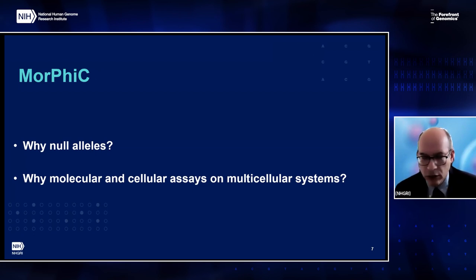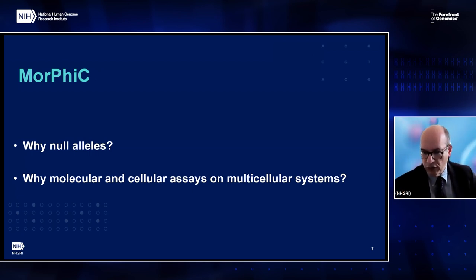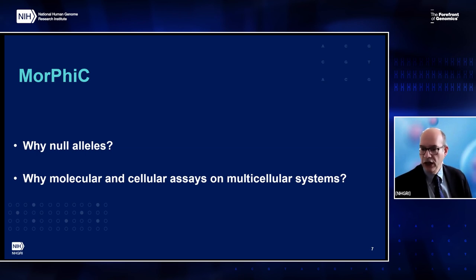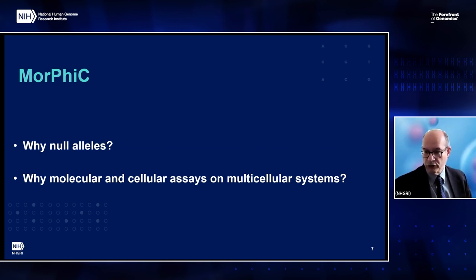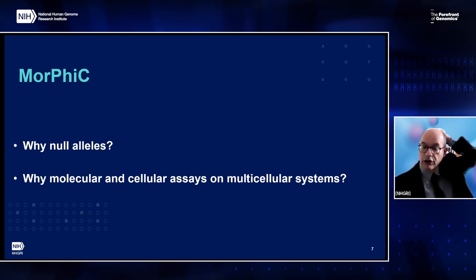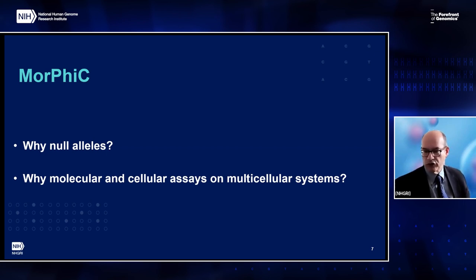To justify our choice of null alleles — those that produce no functional protein, proposed here as homozygotes — there are several reasons. First, we know how to engineer them fairly reliably. Second, because they're likely to be highly penetrant and expressive, it will be easier to see molecular and cellular phenotypes. Third, null alleles are useful for interpreting other alleles in the same gene or similar phenotypes seen for other genes. Fourth, the results will be complementary to extensive gene knockout phenotype data from the Knockout Mouse Project, which has anatomical and physiological data but little molecular and cellular data. Null alleles do have drawbacks, including the possibility of being so highly pleiotropic that interpretation will be complicated. Phase one can inform that.